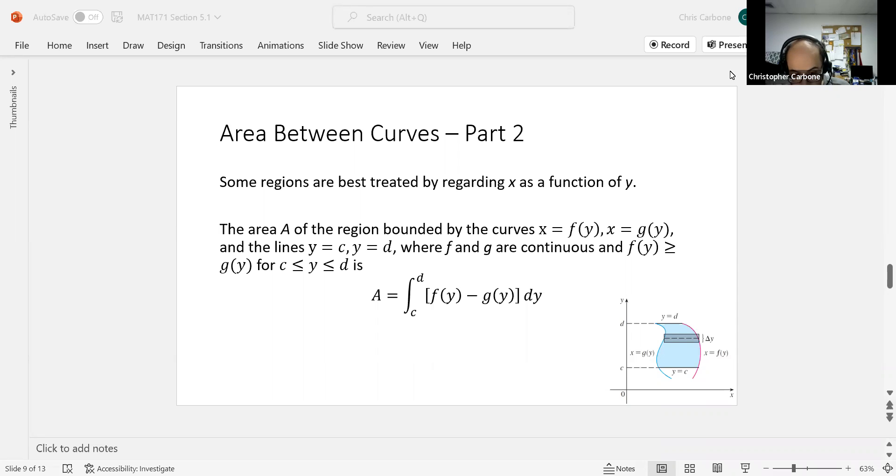The area A of the region bounded by the curves x equals f of y, x equals g of y, and the lines y equals c and y equals d, where f and g are continuous and f of y is greater than or equal to g of y for y between c and d inclusive, would be the integral from c to d of f of y minus g of y dy.